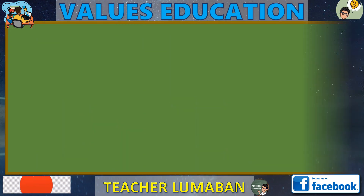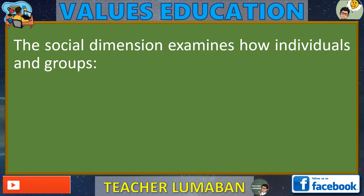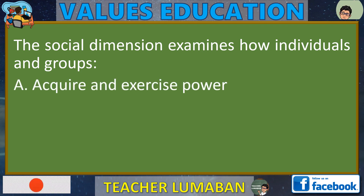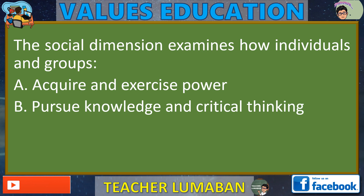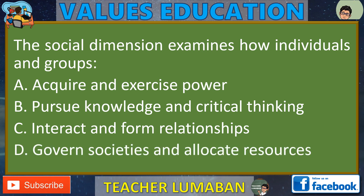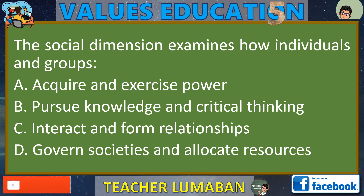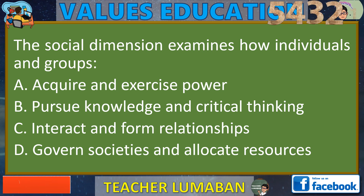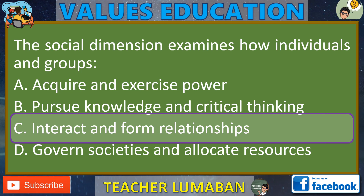The social dimension examines how individuals and groups: Letter A: Acquire and exercise power. Letter B: Pursue knowledge and critical thinking. Letter C: Interact and form relationships. Letter D: Govern societies and allocate resources. In the next 5 seconds, select the best response from the available options. The correct answer is C, Interact and form relationships. Ang tamang sagot ay C, Makipag-ugnayan at bumuo ng mga relasyon.